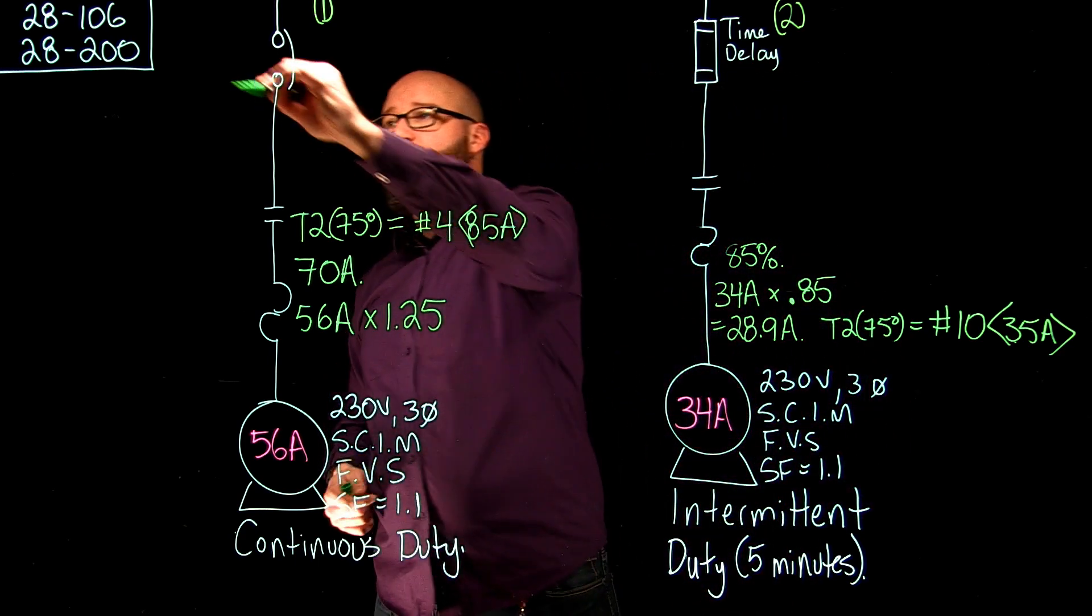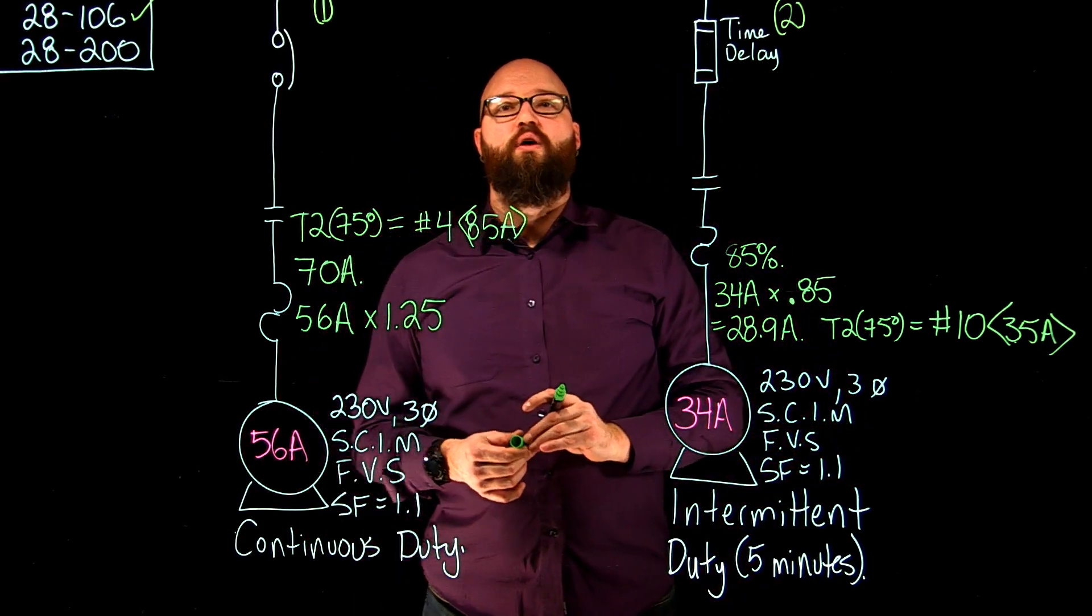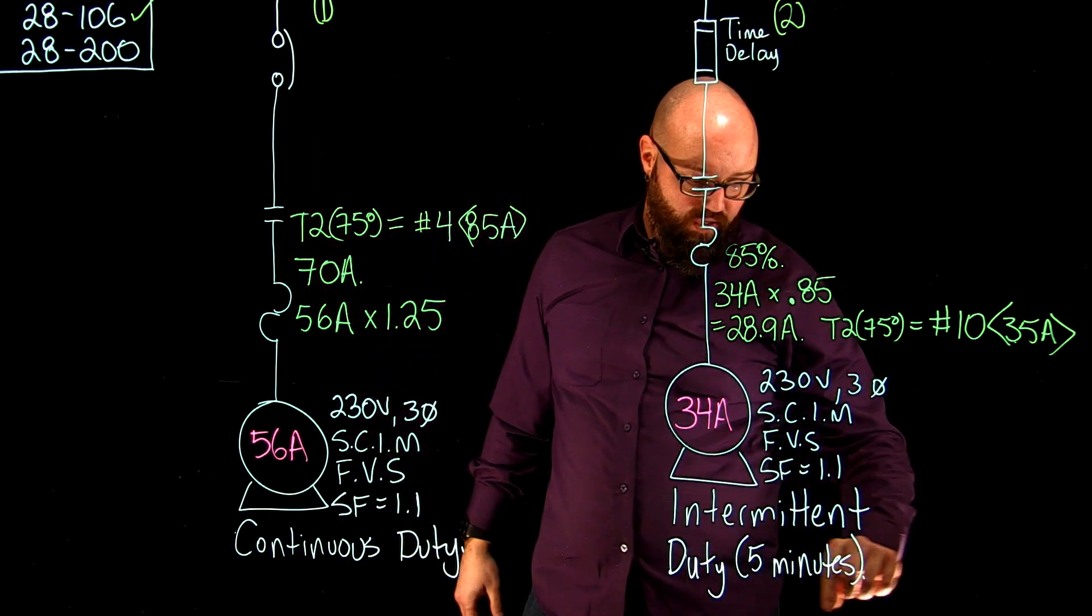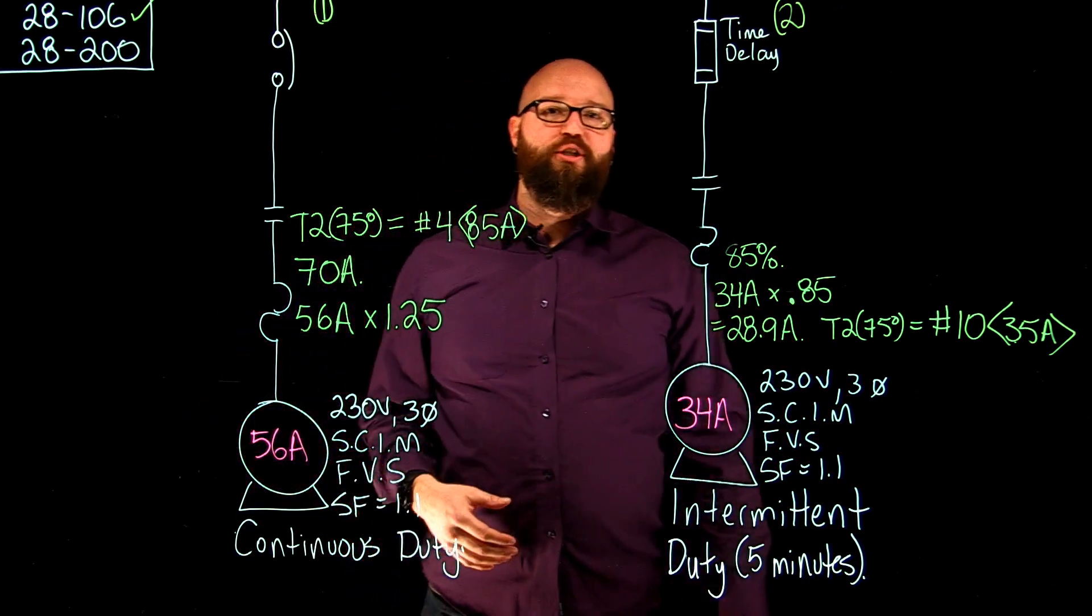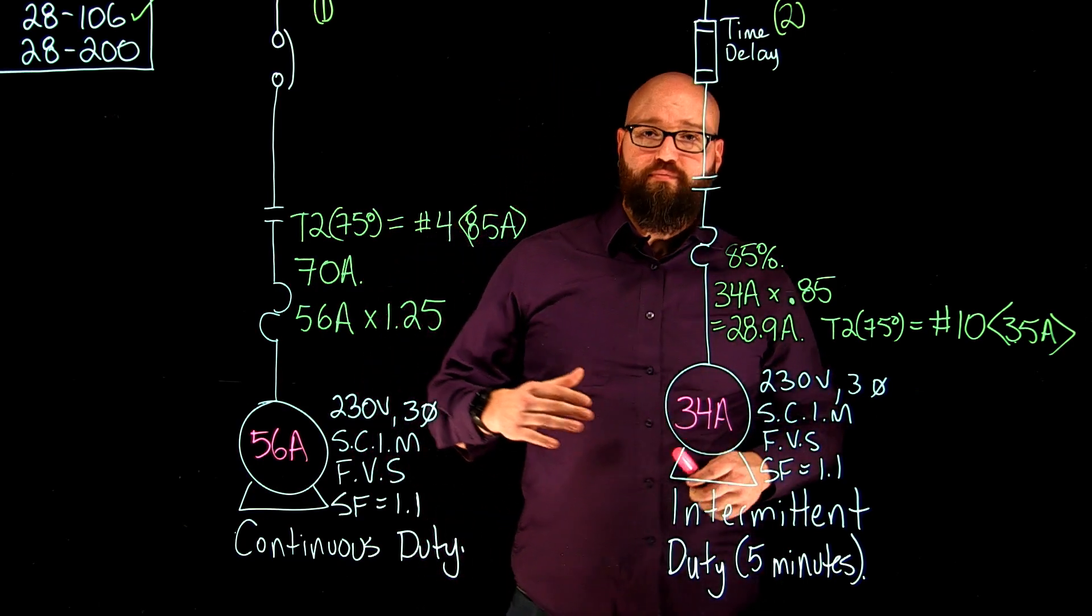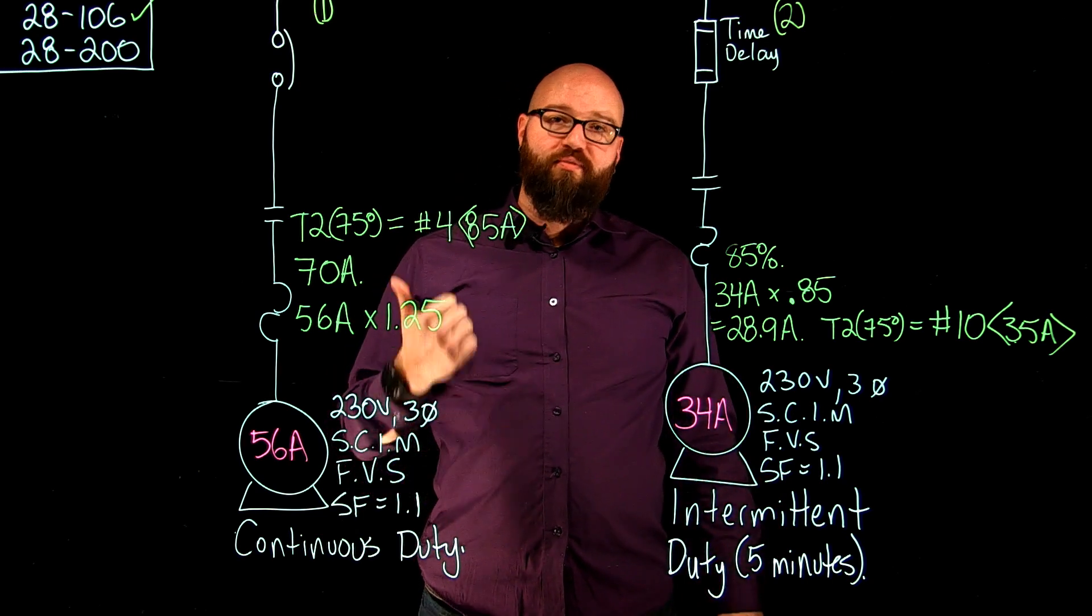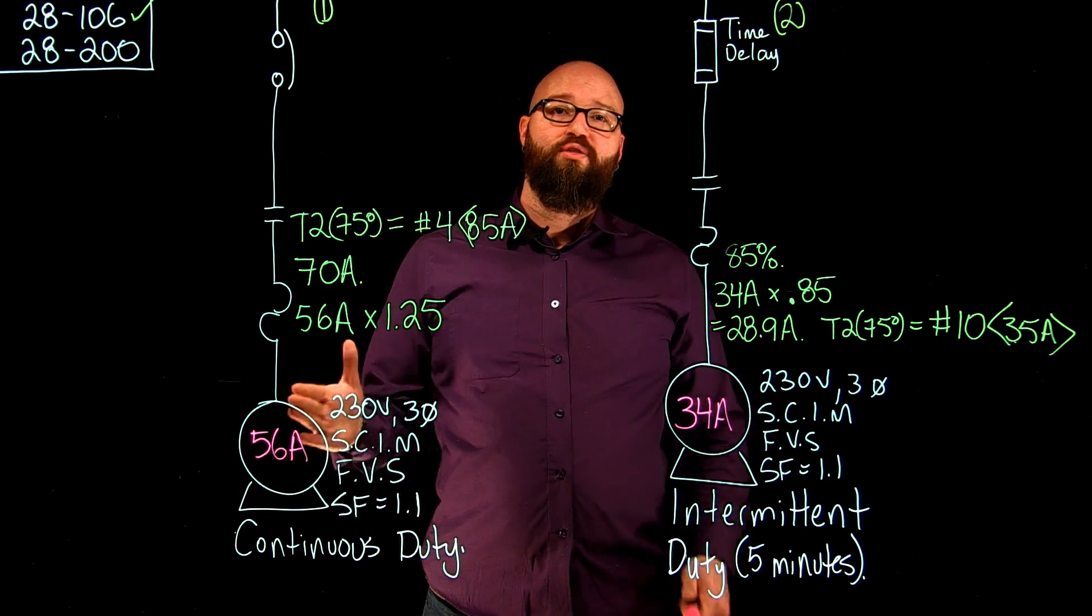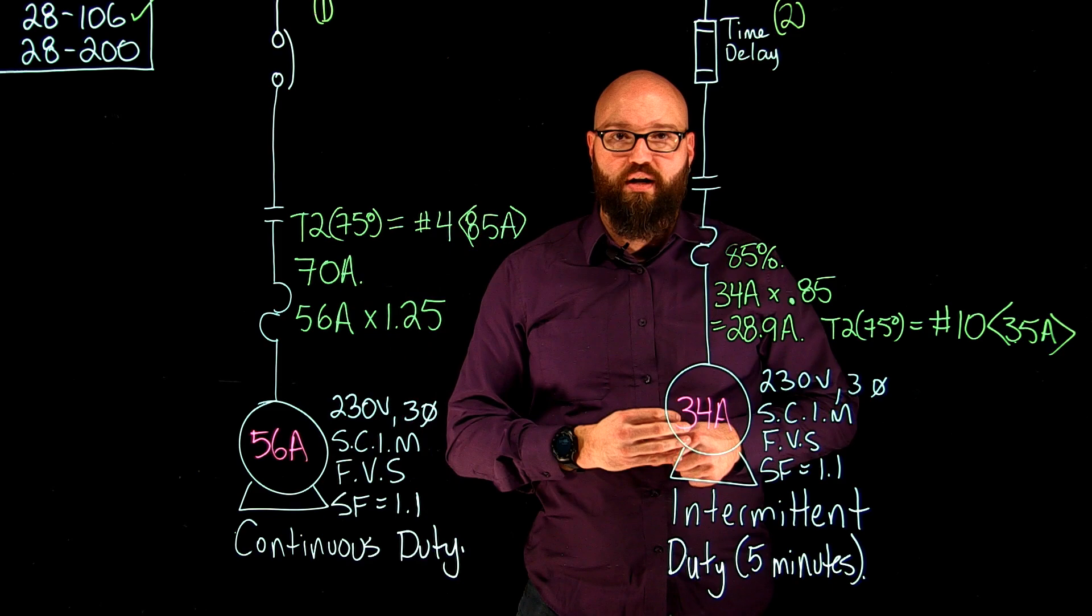So 28-106, we've got that covered. We're going to take a look at 28-200, where we're sizing the overcurrent devices for our motors. So when I go to table 29, I don't care so much about the duty rating anymore. What I actually care about at table 29, the parameters that they're giving me, I need to know what type of motor I'm dealing with, what type of starting the motor has, what type of overcurrent protection I actually have on that branch as well. Those are all going to help me determine that multiplying factor that I'm going to get from table 29.